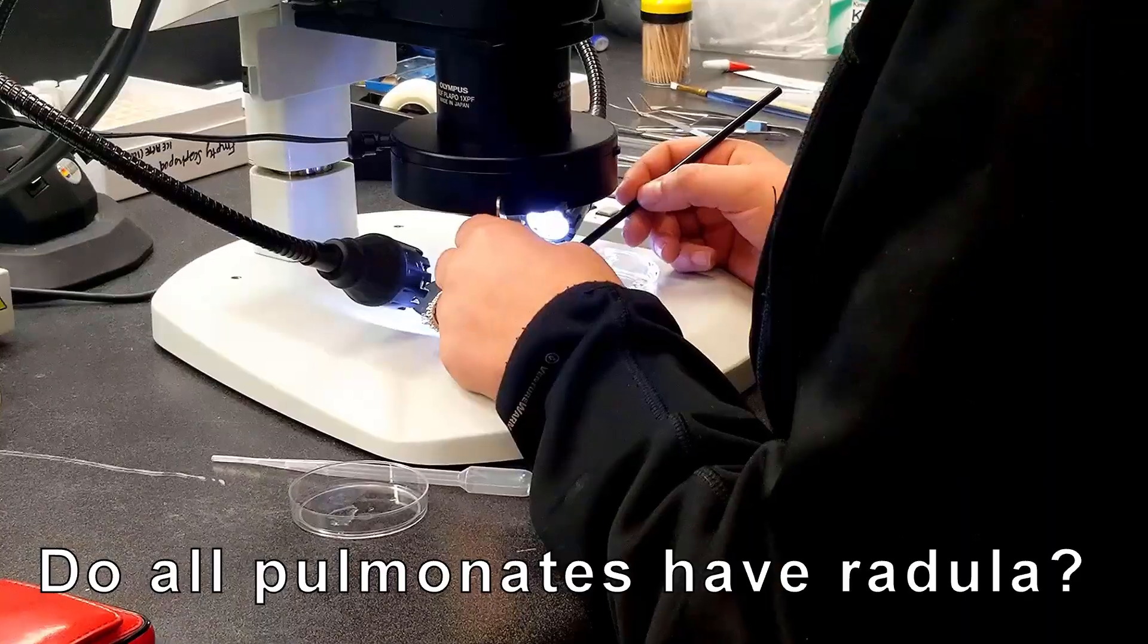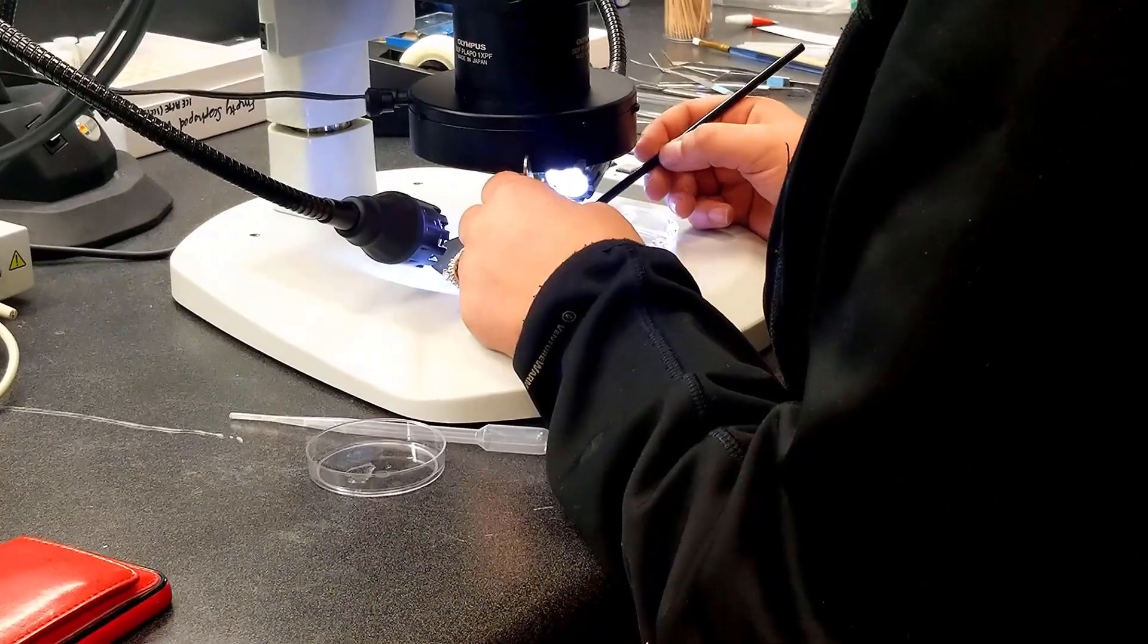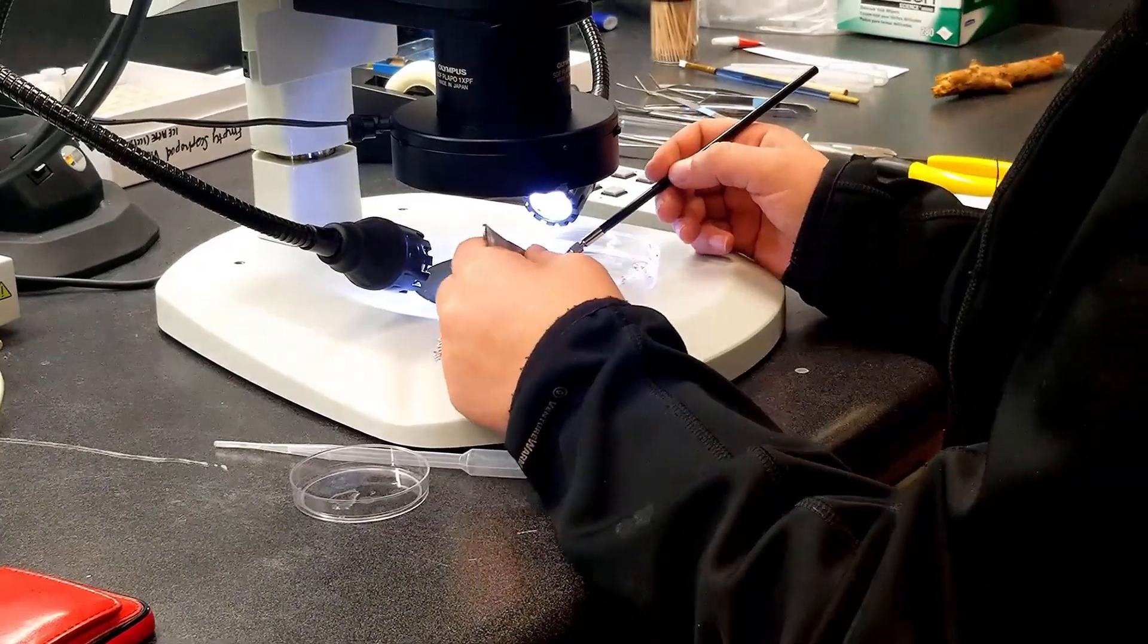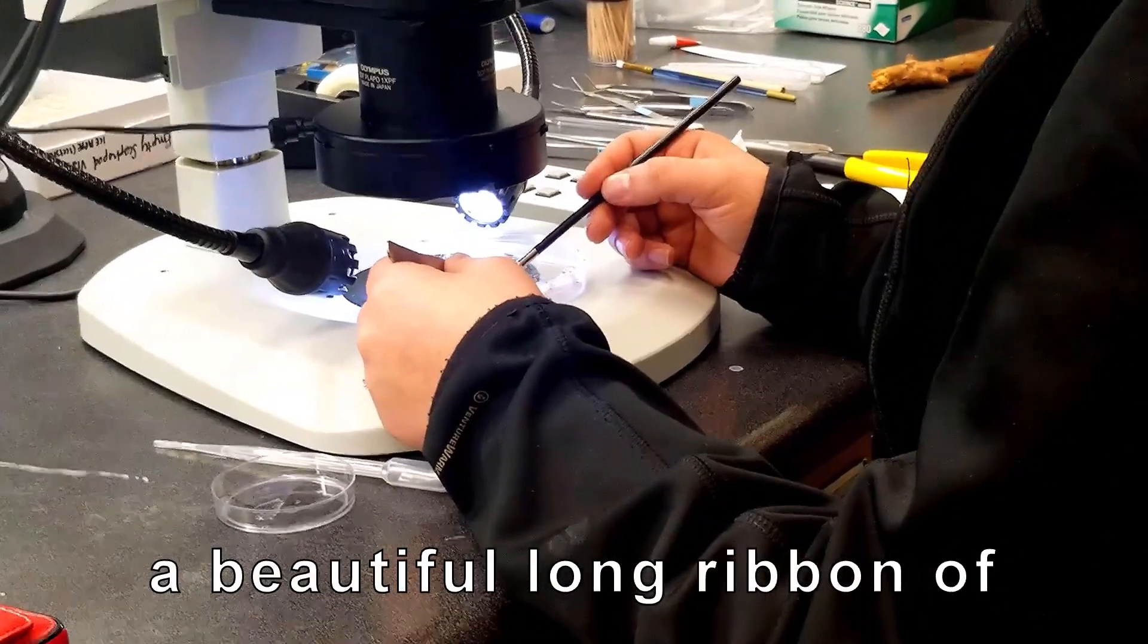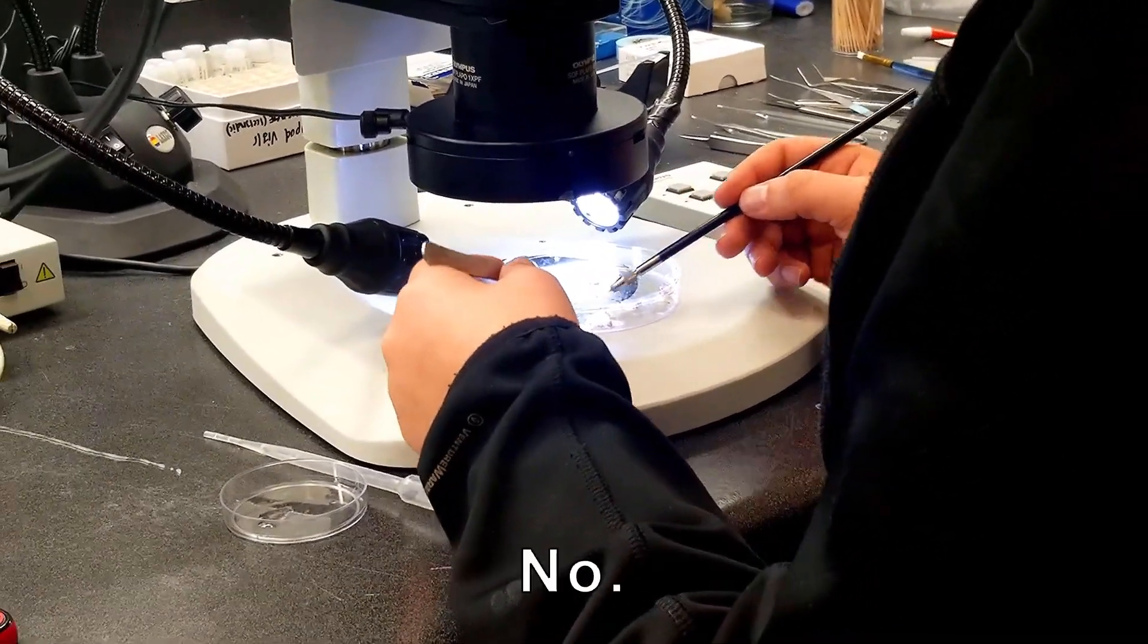Well, radula in what form, right? Like, are they all expecting to find a beautiful long ribbon of, you know, 17 teeth per row in every snail though?